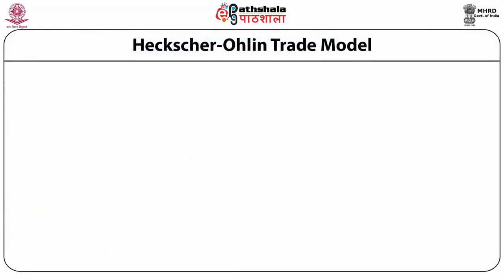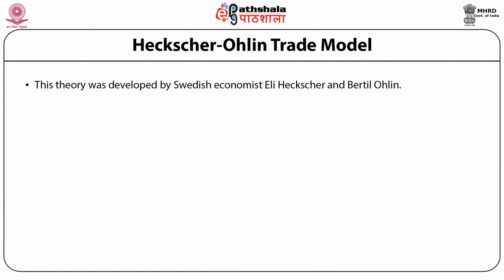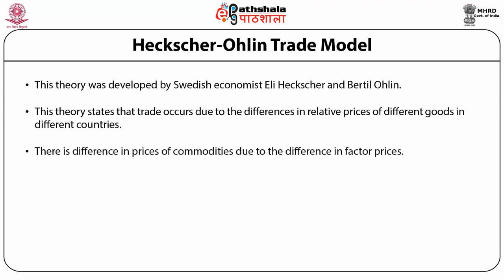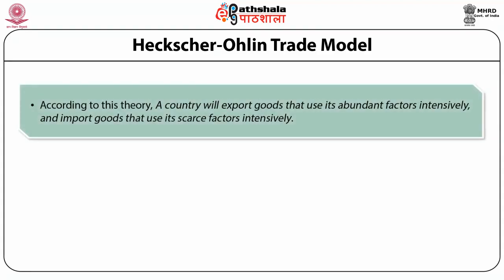The Heckscher-Ohlin trade model was developed by Swedish economists Eli Heckscher and Bertil Ohlin, and is popularly known as the HO theory. This theory states that trade occurs due to differences in relative prices of different goods in different countries. There is a difference in the prices of commodities due to the difference in factor prices. Different countries have different factor endowments. According to this theory, a country will export goods that use its abundant factors intensively and import goods that use its scarce factors intensively.